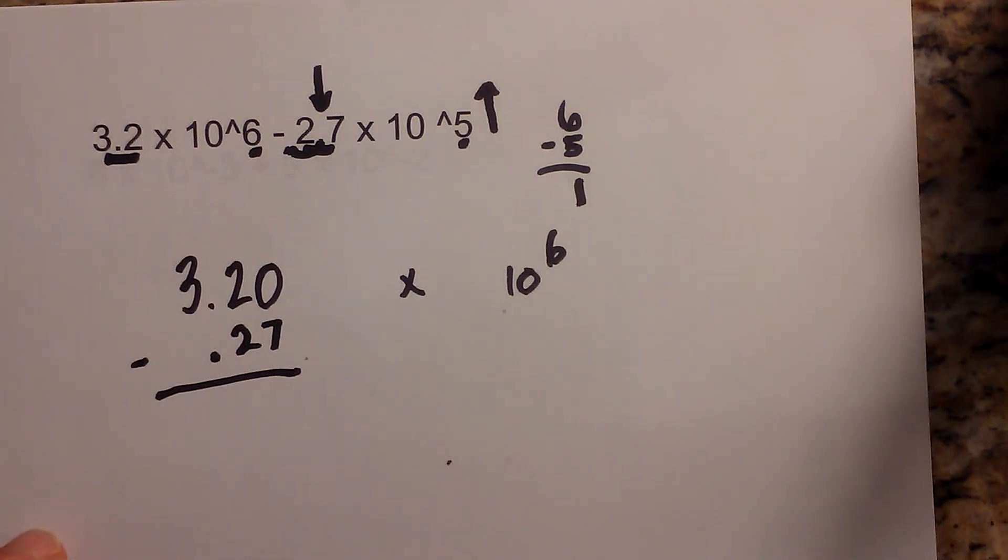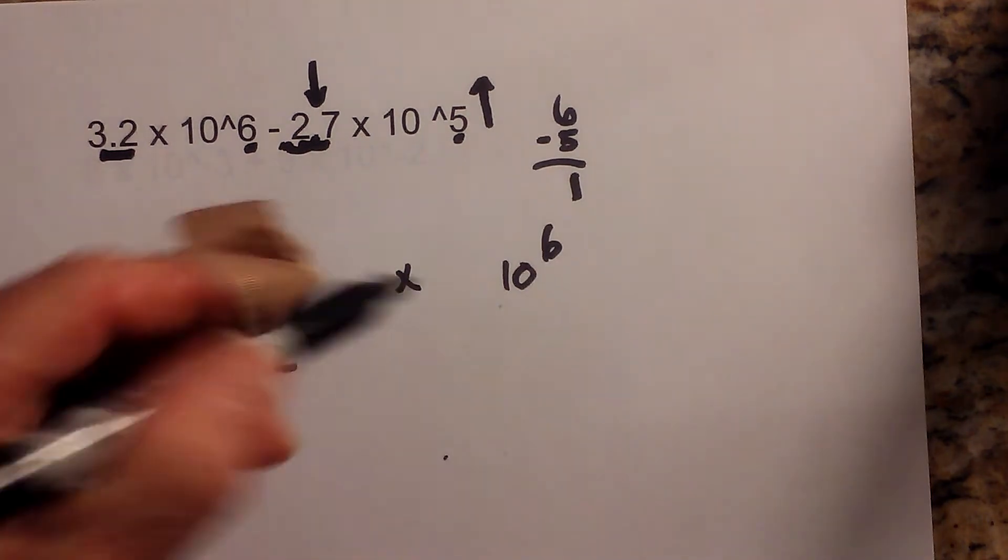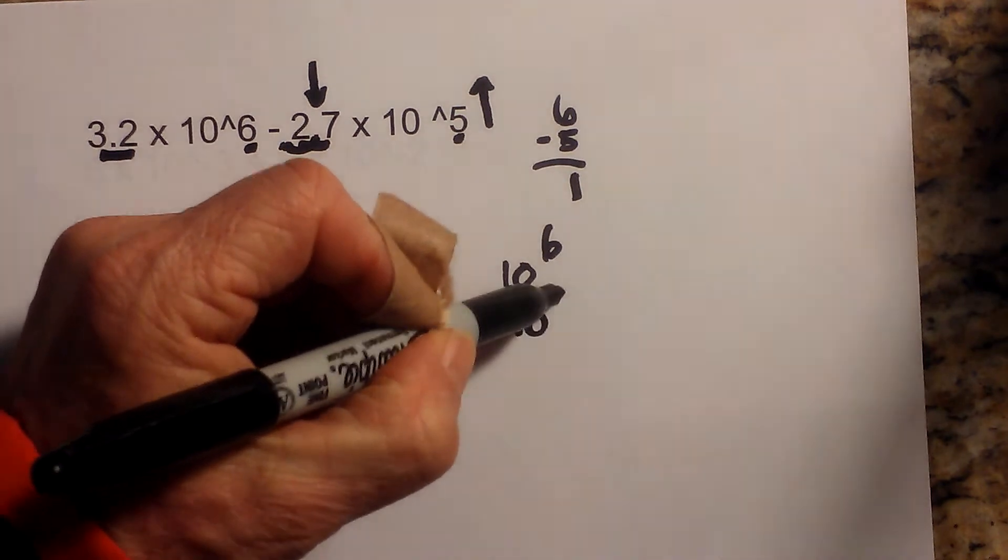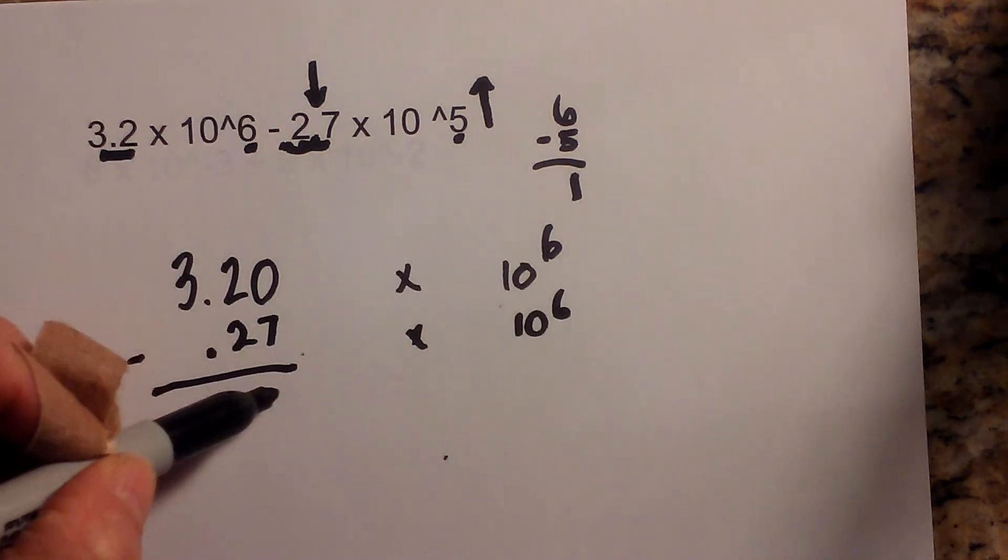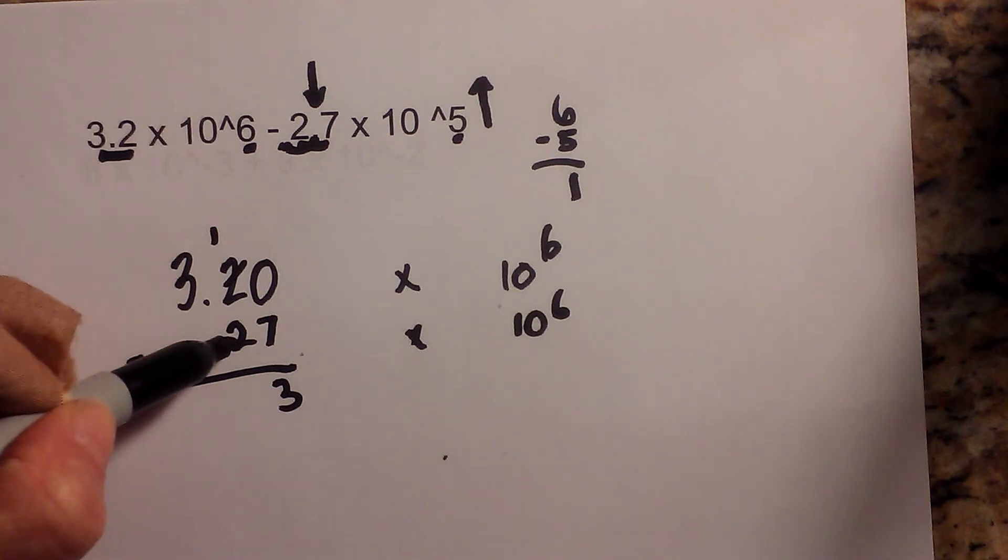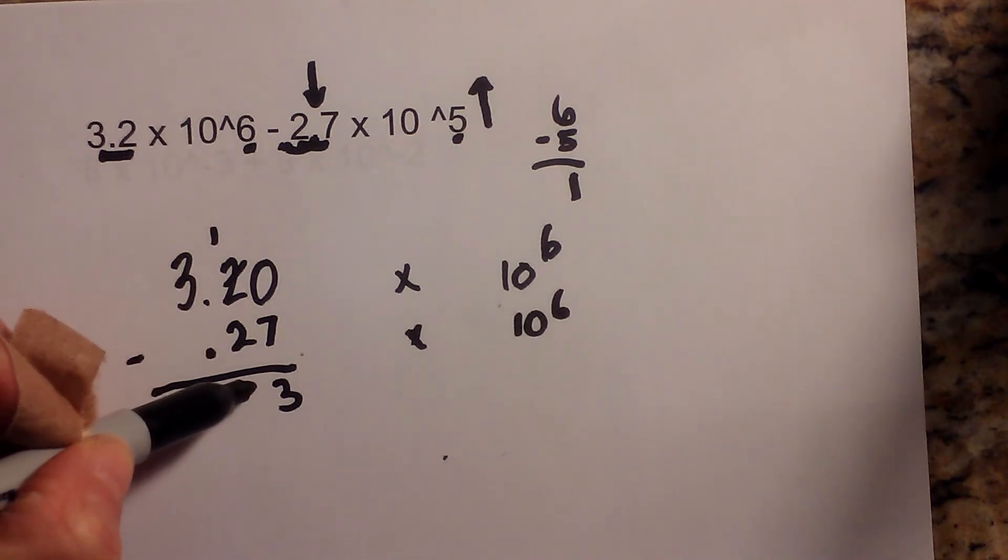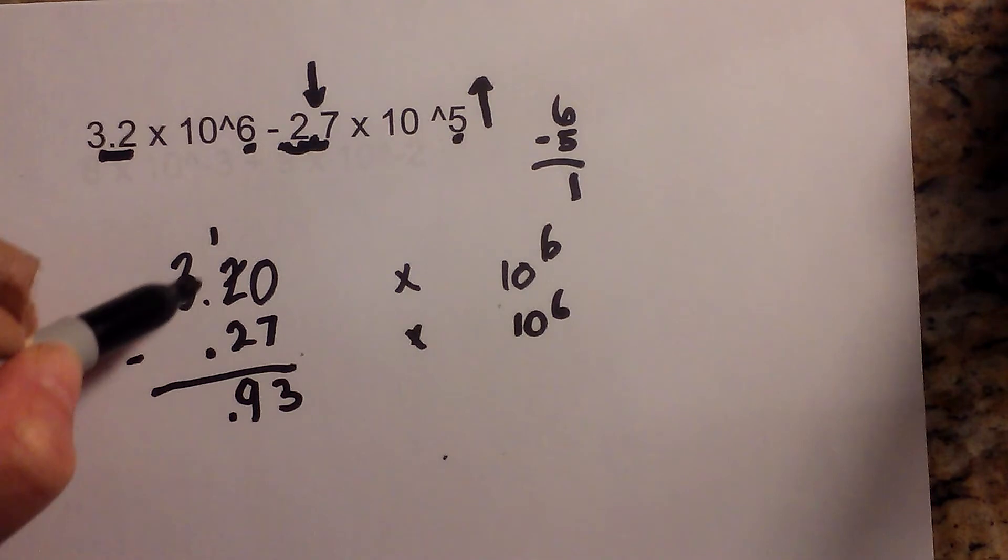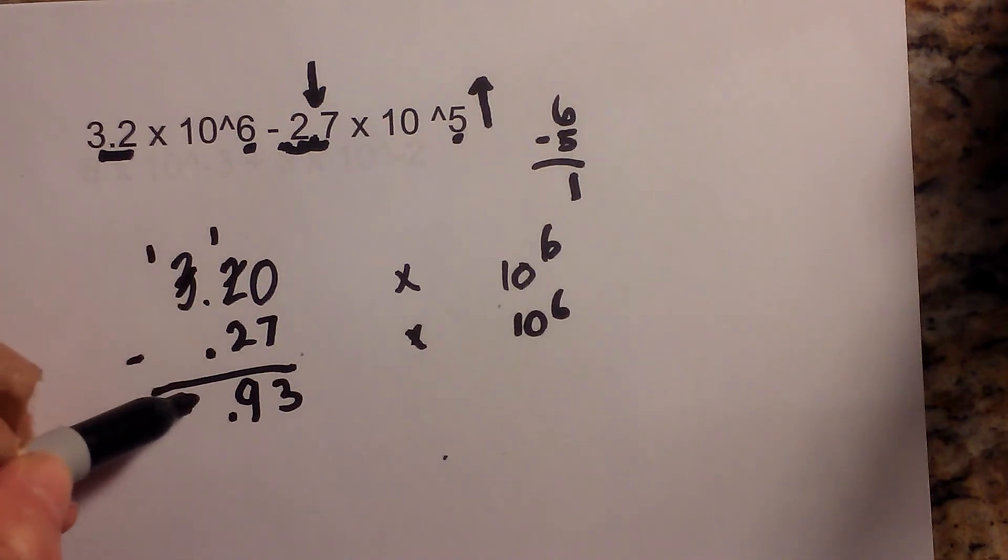And so now I just subtract. 0 minus 7 is 3, I'm going to borrow 1 from the other side. 2 will go into 11 nine times, and I've borrowed 1, so that is 2.93.